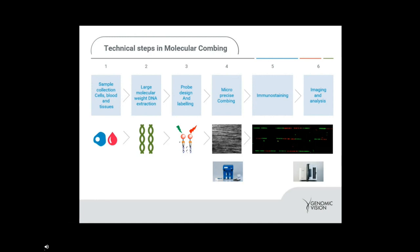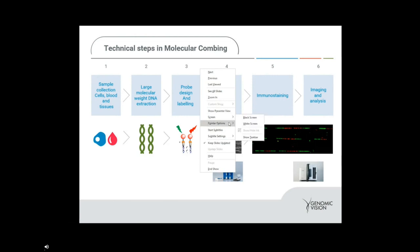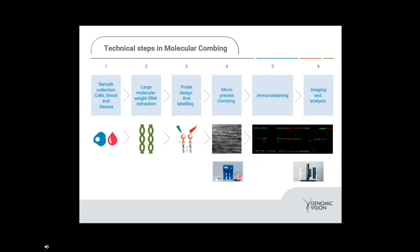We then use our FiberComb system, shown at the bottom of the slide, which is a small benchtop device that enables the coating and stretching of uniform DNA fibers to perform micro-precise combing. We then immunostain that combed DNA with the probes and the genomic Morse codes described earlier, ending up with different motifs of different stretches of green and red. We perform the imaging and analysis using either FiberVision or FiberVision S instrumentation, which performs the scanning and houses our Fiber Studio platforms for automated analysis.